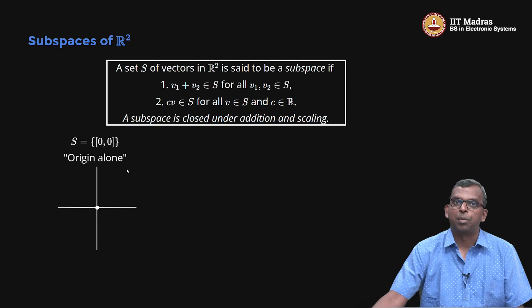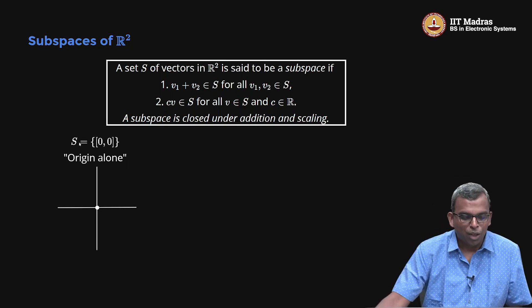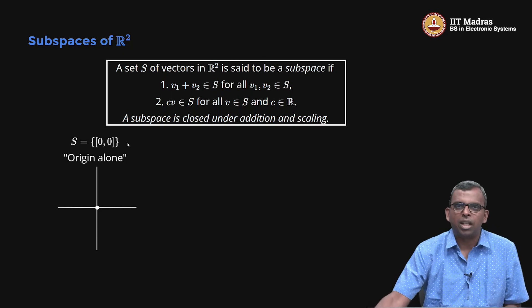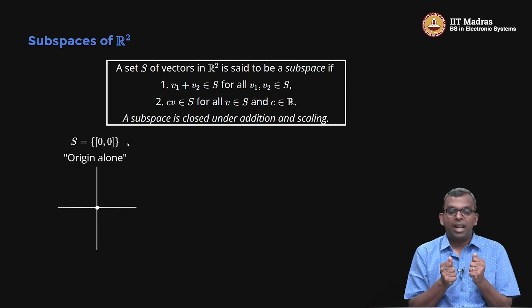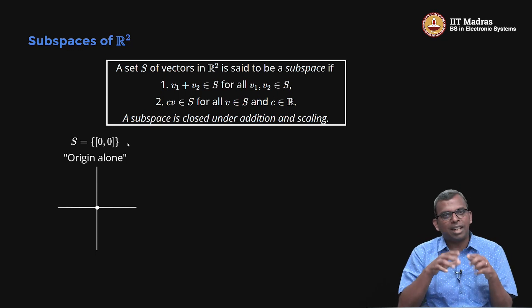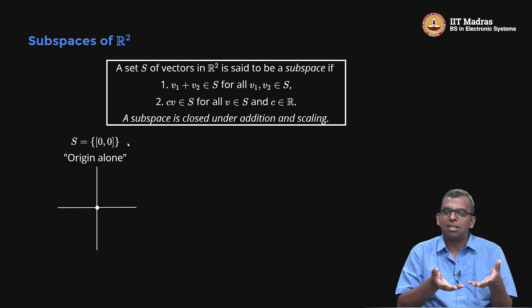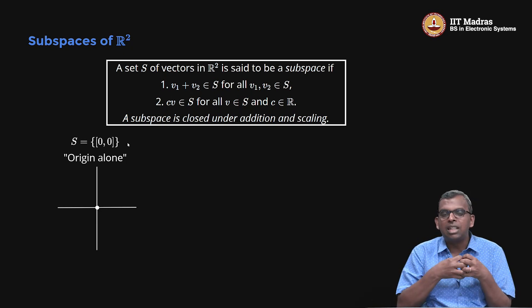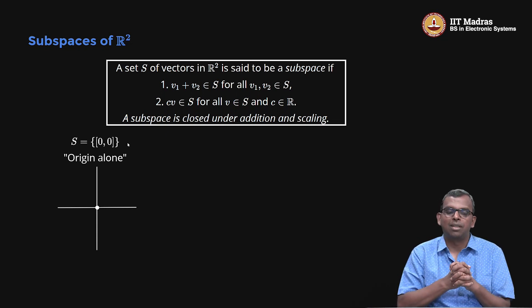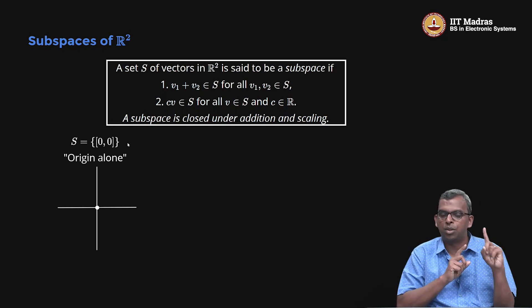Here are examples of subspaces. If you take the set S to be only the origin, it is a subspace. Why? Because if I take the origin and add it to itself, I get the origin. If I take the origin and scale it by any real number, I still get the origin. So the origin is closed under addition and scaling, and thus becomes a subspace. It is a trivial subspace — not very interesting — but remember that the origin is always a subspace.